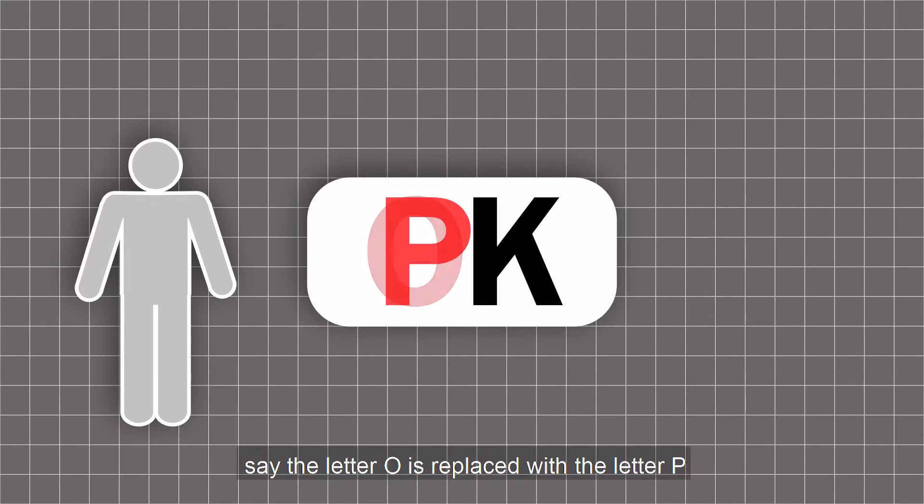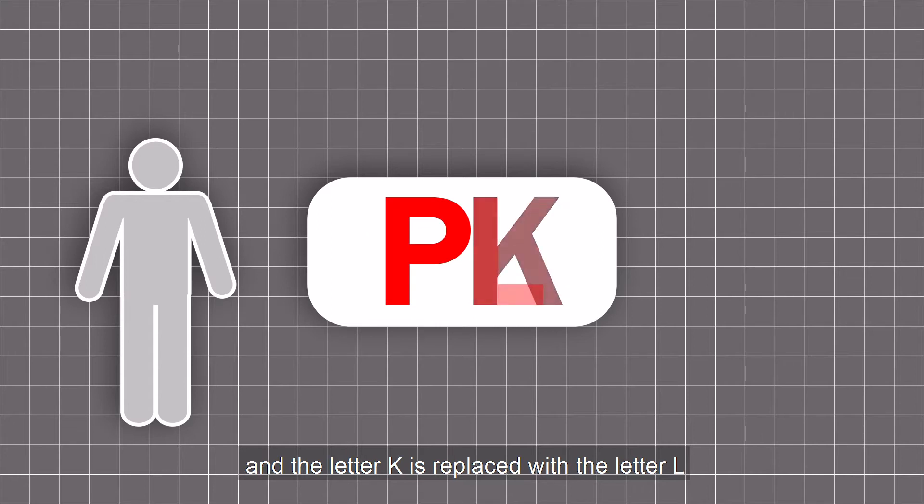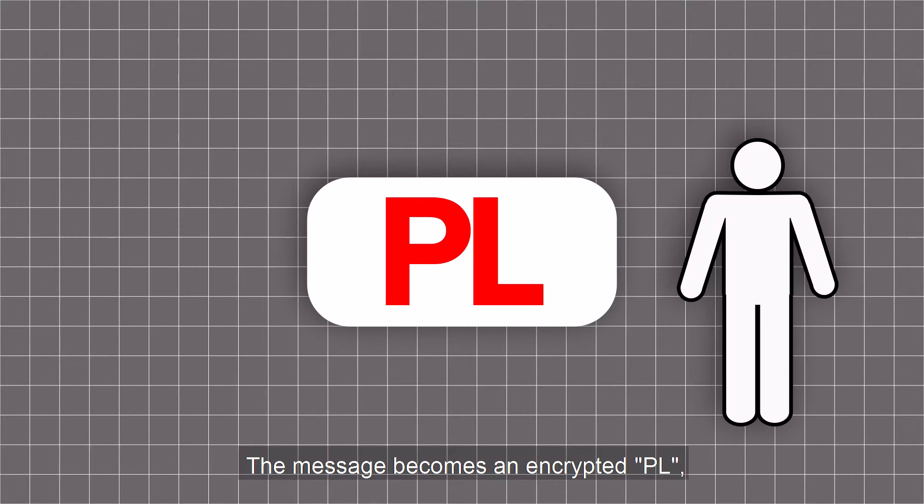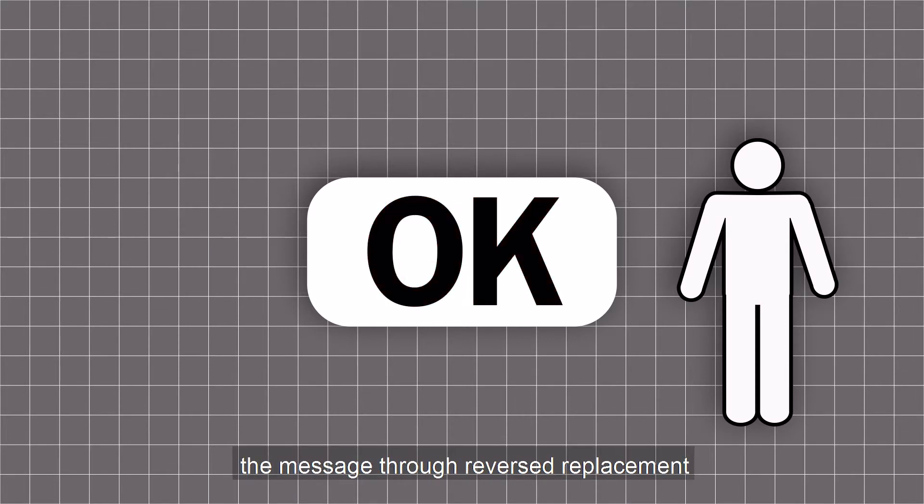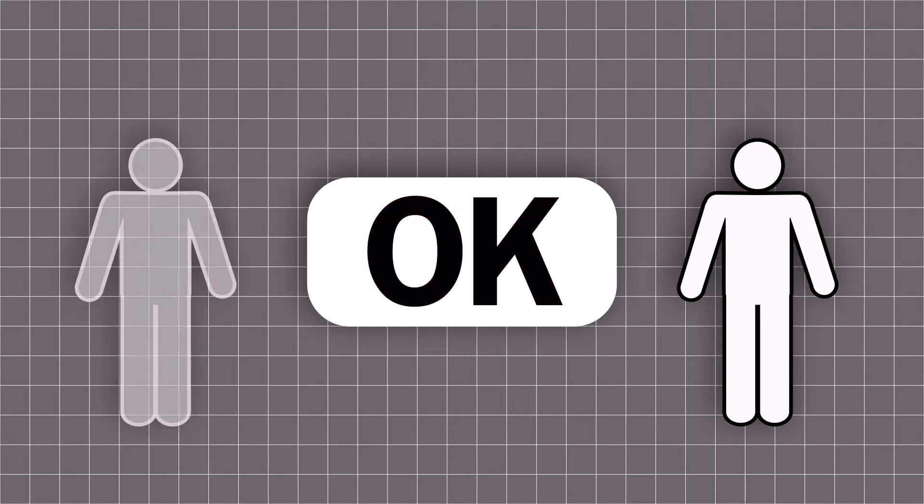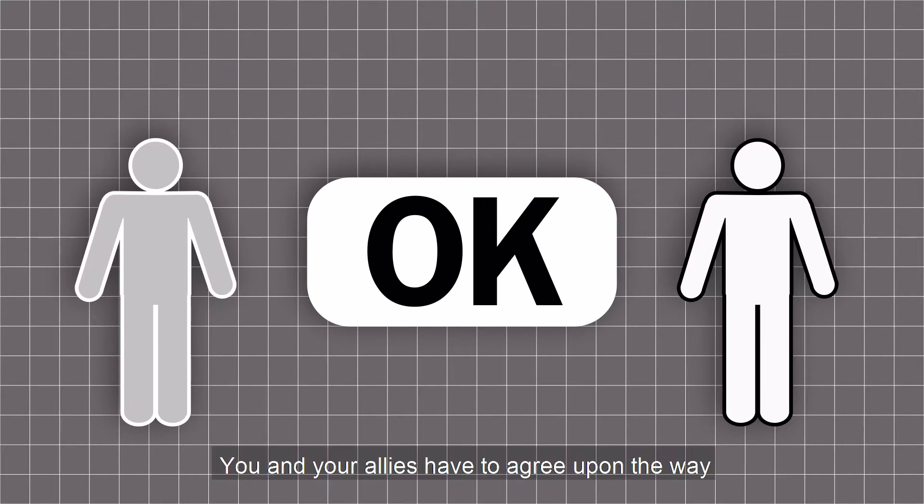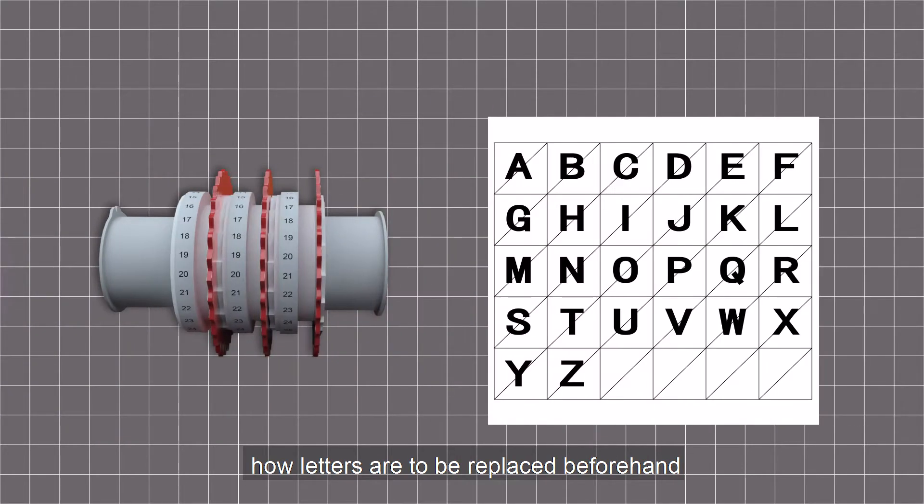Say the letter O is replaced with the letter P, and the letter K is replaced with the letter L. The message becomes an encrypted PL, and your allies could decrypt the message through reversed replacement. You and your allies have to agree upon the way how letters are to be replaced beforehand.